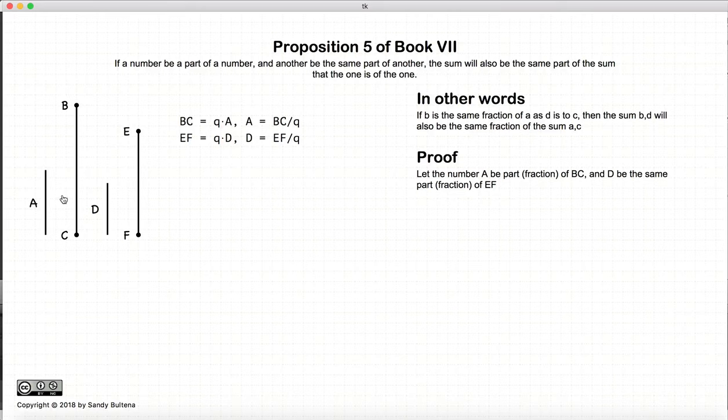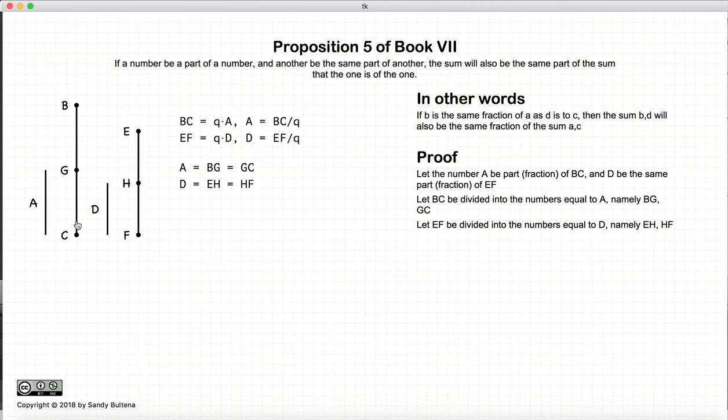So, first, let's start off with a and bc. So, a is a certain fraction of bc. d is the same fraction of ef. And what we're going to do is we are going to divide bc into equal segments where each segment is equal to a.